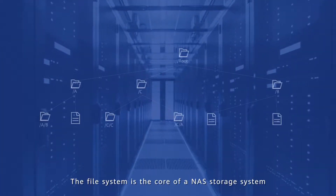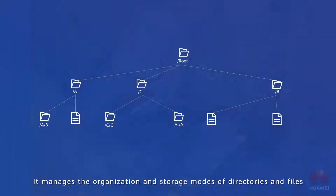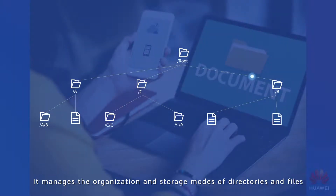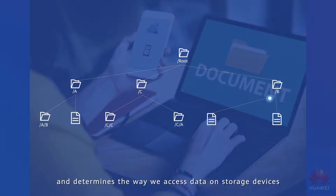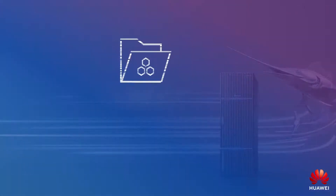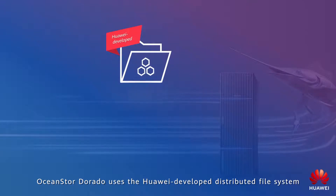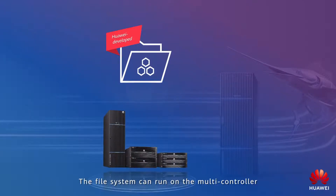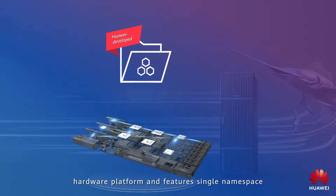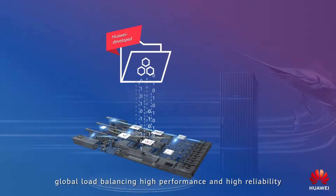The file system is the core of a NAS storage system. It manages the organization and storage modes of directories and files, and determines the way we access data on storage devices. OceanStore Dorado uses a Huawei-developed distributed file system. The file system can run on the multi-controller hardware platform and features single namespace, global load balancing, high performance, and high reliability.